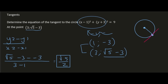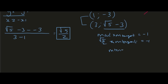So the tangent would look like that. We need to work out the gradient of the tangent. The gradient of the radius times the gradient of the tangent equals -1 since they are 90 degrees. The radius gradient is √5/2, and solving for the tangent gradient gives us -2/√5. So y = (-2/√5)x + c.